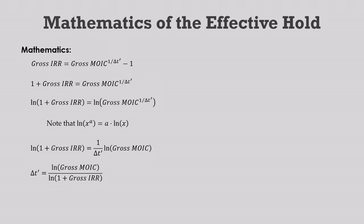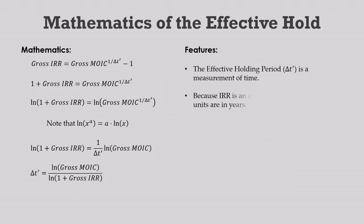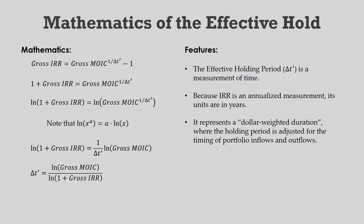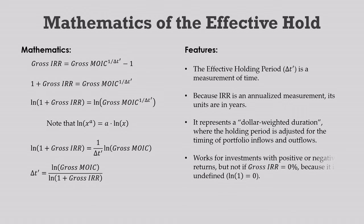The math is clear, but what does it mean? The effective hold is a measurement of time — its units are in years because it comes from the IRR, which is an annualized return measurement. It represents what I call a dollar-weighted duration, a holding period adjusted for the timing of all the inflows and outflows that occur during the hold. It'll work for any deal that has a positive or negative return. Unfortunately, not when gross IRR is 0%, because that makes the argument within the natural logarithm go to 1, which makes the denominator go to 0 and the formula blow up. When this happens, we either need to nudge a valuation up or down a bit, or swap out the effective holding period with an actual holding period.